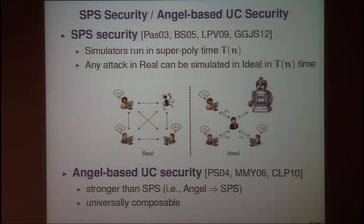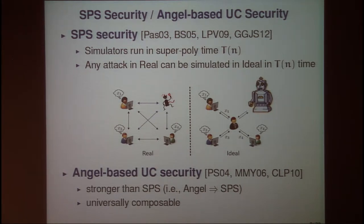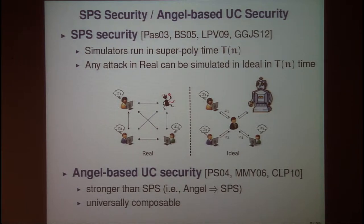Engine-based UC security is closely related to SPS security, and in particular it is a stronger security notion than SPS security. So whenever SPS security guarantees a sufficient level of security, engine-based UC security also guarantees meaningful security. In addition, unlike SPS security, which does not guarantee universal composability, engine-based UC security does guarantee universal composability. By using engine-based UC security, we can construct universally composable MPC protocols without using any trusted setups.